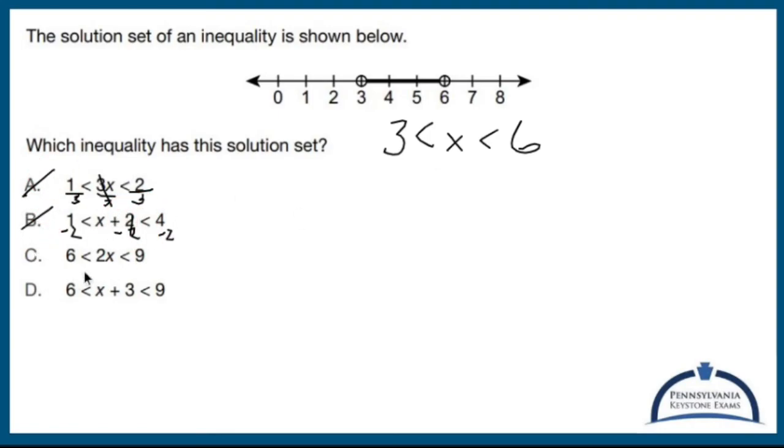So let's get rid of a and b. If I divide everything here by 2, oh, it's promising. 6 divided by 2 is 3. x is all alone in the middle. 9 divided by 2 is not 6, so it's not c.